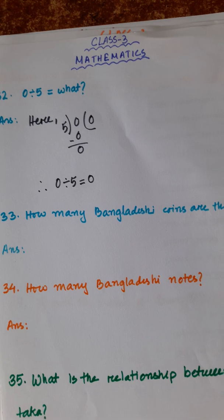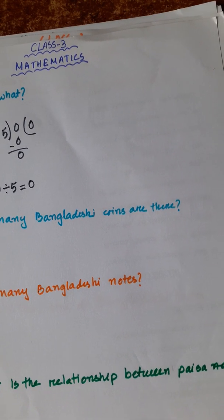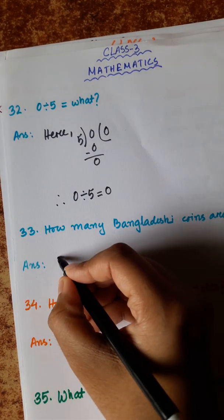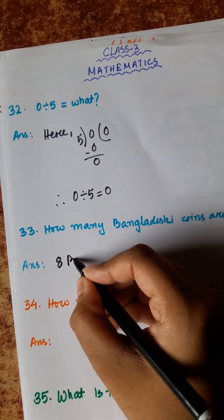Number 33. How many Bangladeshi coins are there? There are 8 Bangladeshi coins.